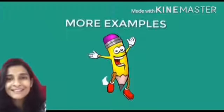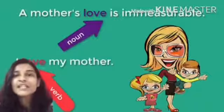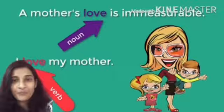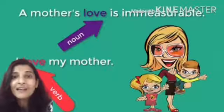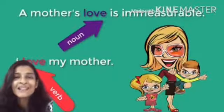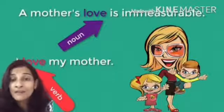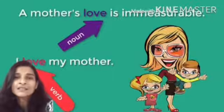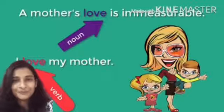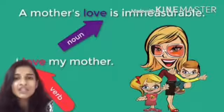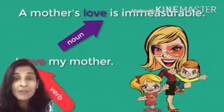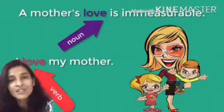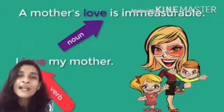Let's check out a few examples. First: 'A mother's love is immeasurable.' Second: 'I love my mother.' In both sentences, 'love' is the common word. In the first sentence, love is a noun — it's an abstract noun referring to an emotion. In the second sentence, love is a verb — it describes an action we are performing.